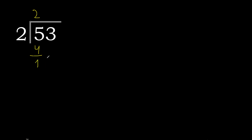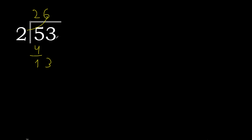Bring down 3, that gives 13. 2 multiplied by 7 is 14 — too big. 2 multiplied by 6 is 12.